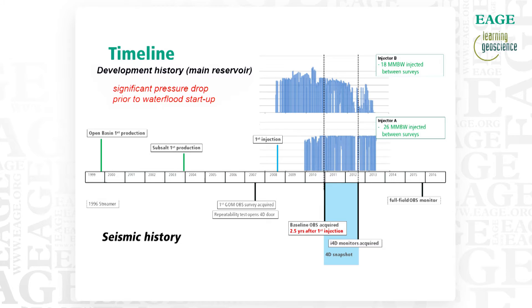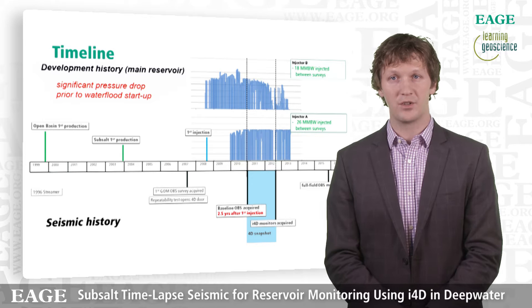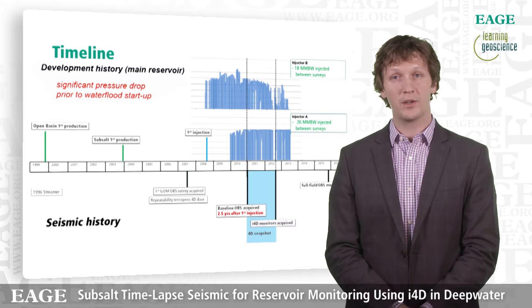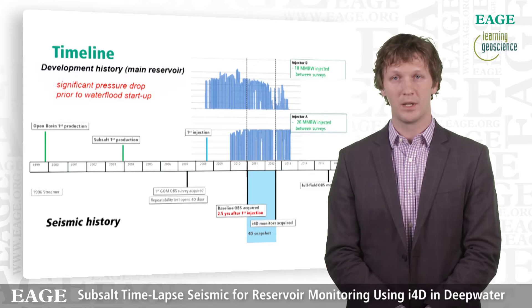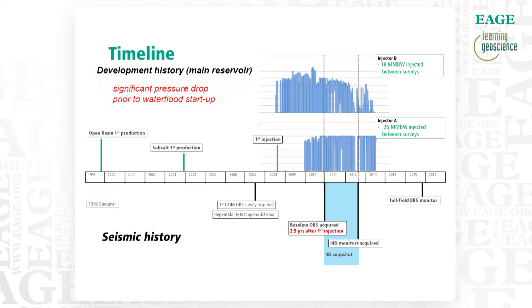During this period, we had pretty good injection for both injectors. Injector B had about 16 million barrels of water injected, and injector A had about 26 million barrels. Injector A was performing very well — you can see by the flat plateau of those injected volumes — but injector B had a couple of problems. We had some injectivity issues just prior to the monitor, so the monitor was really useful for understanding what was going on with that injector.